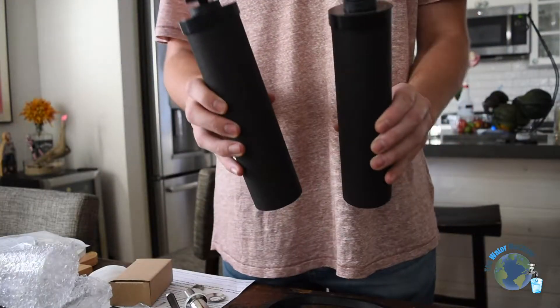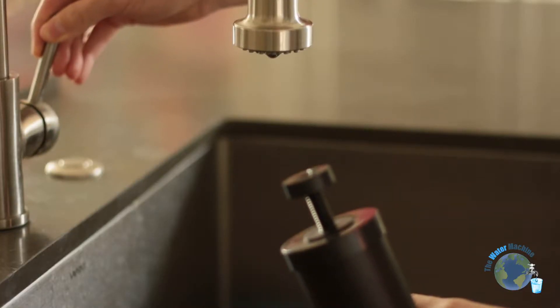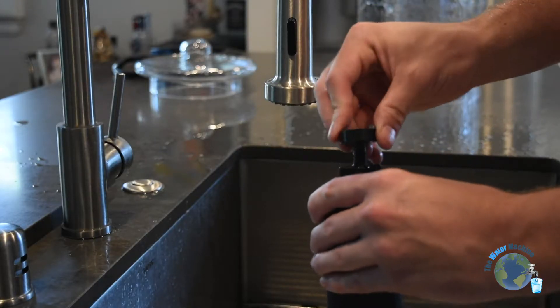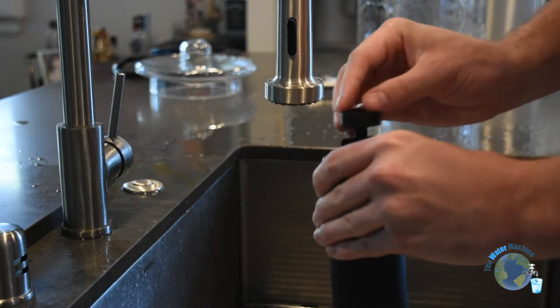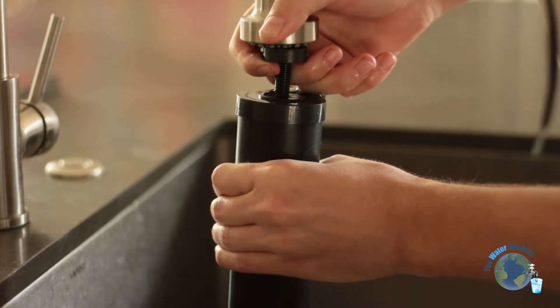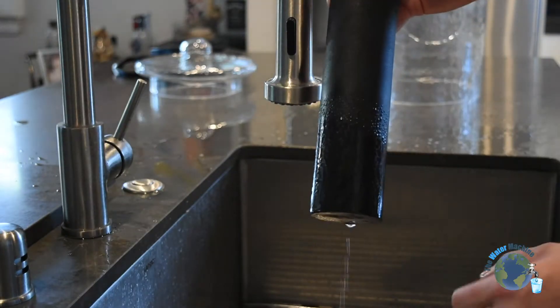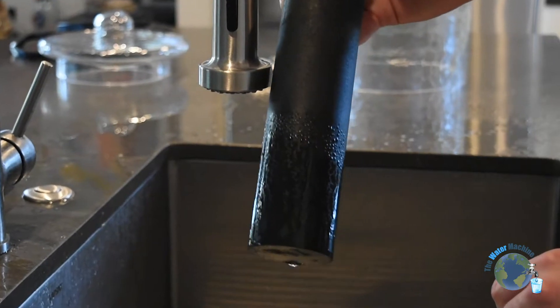Remove the filters and prime them by turning your faucet water on very little and placing the black rubber washer on top of the filter step to create a seal while pressing it up against the faucet. This will push the water molecules through the micropores and it removes any dust from manufacturing.